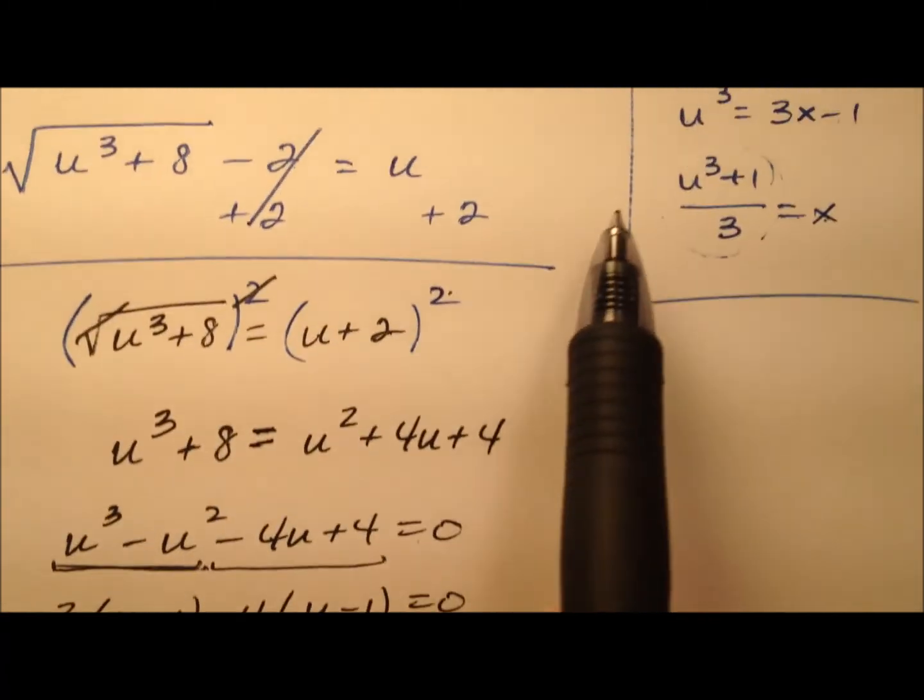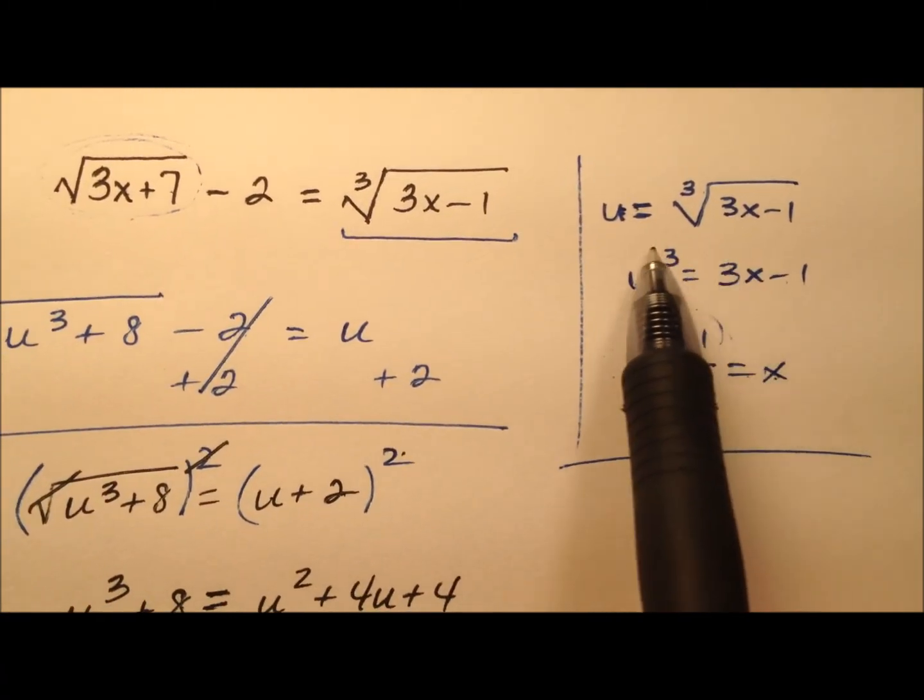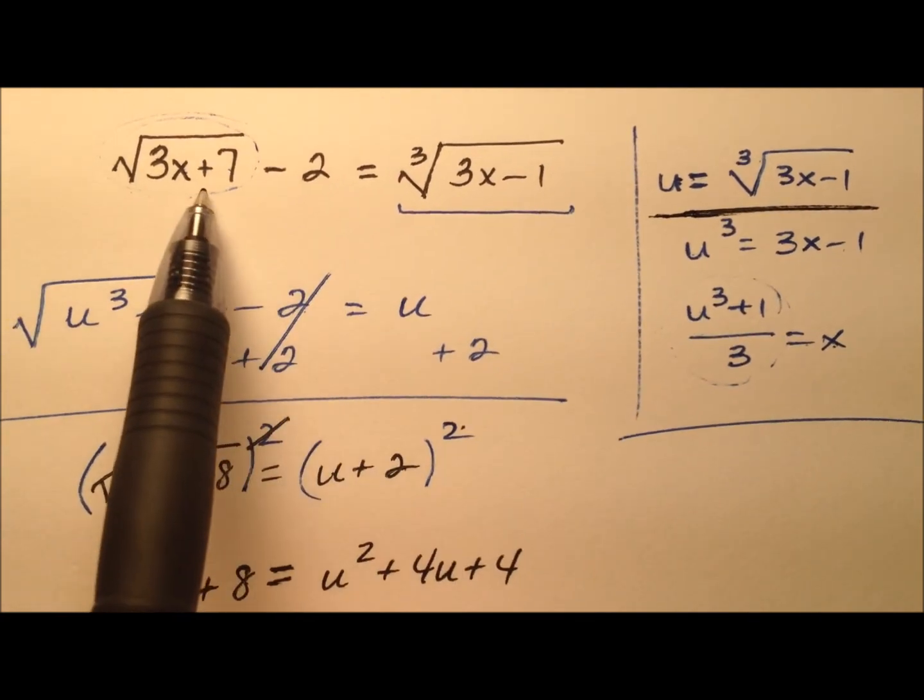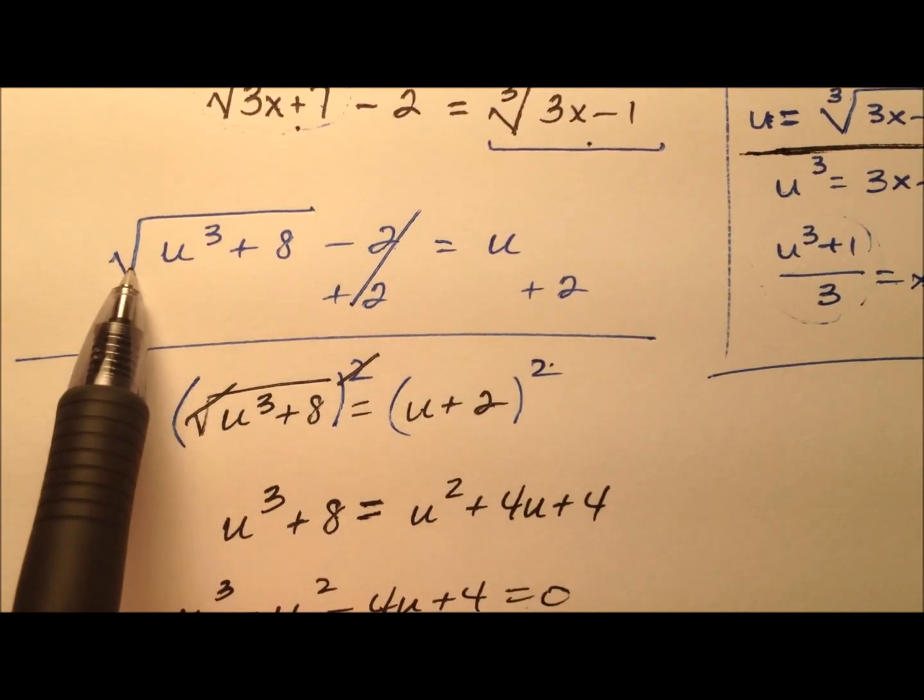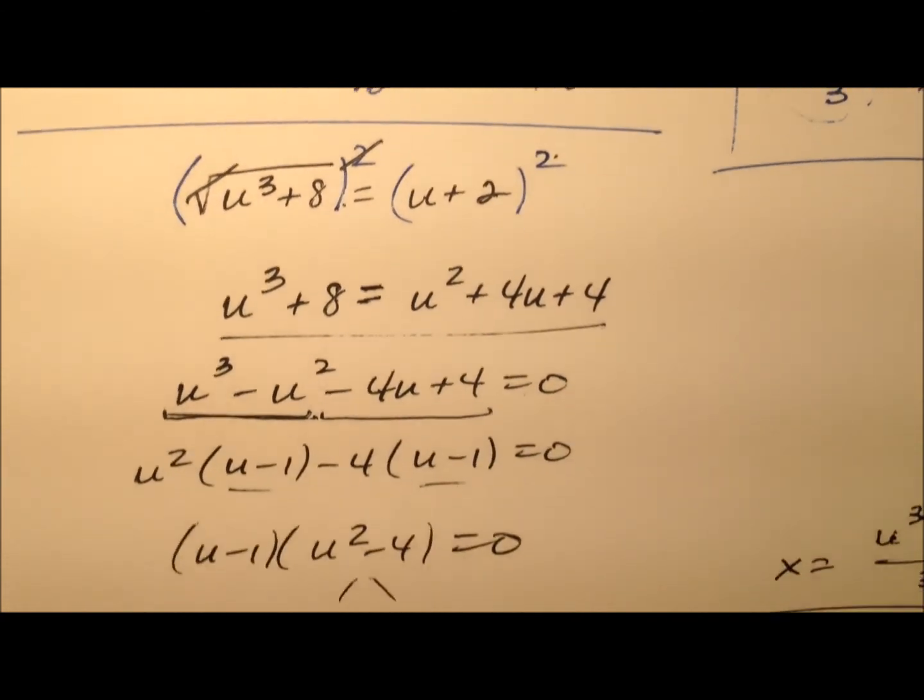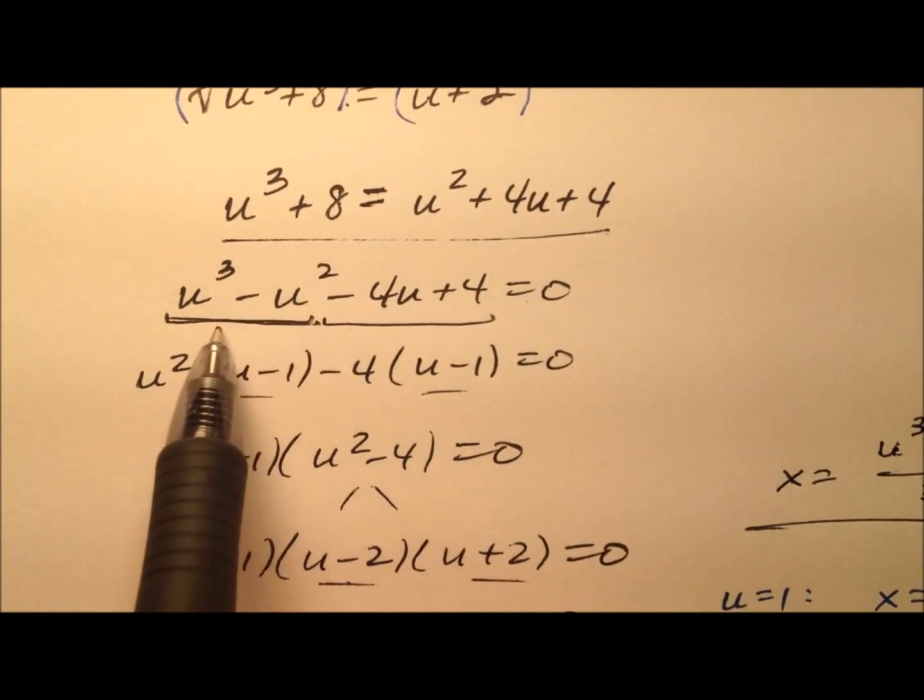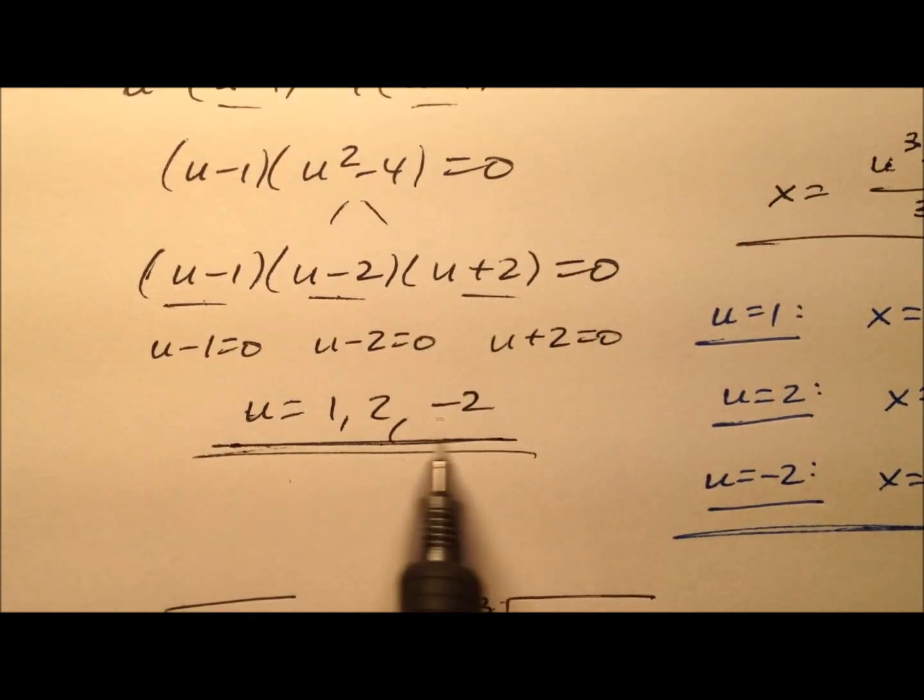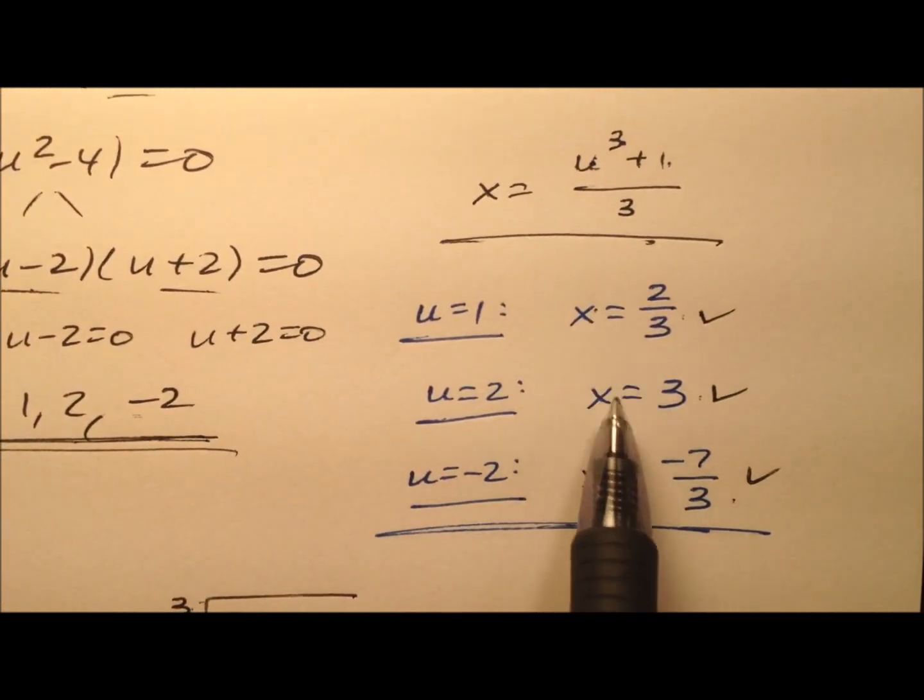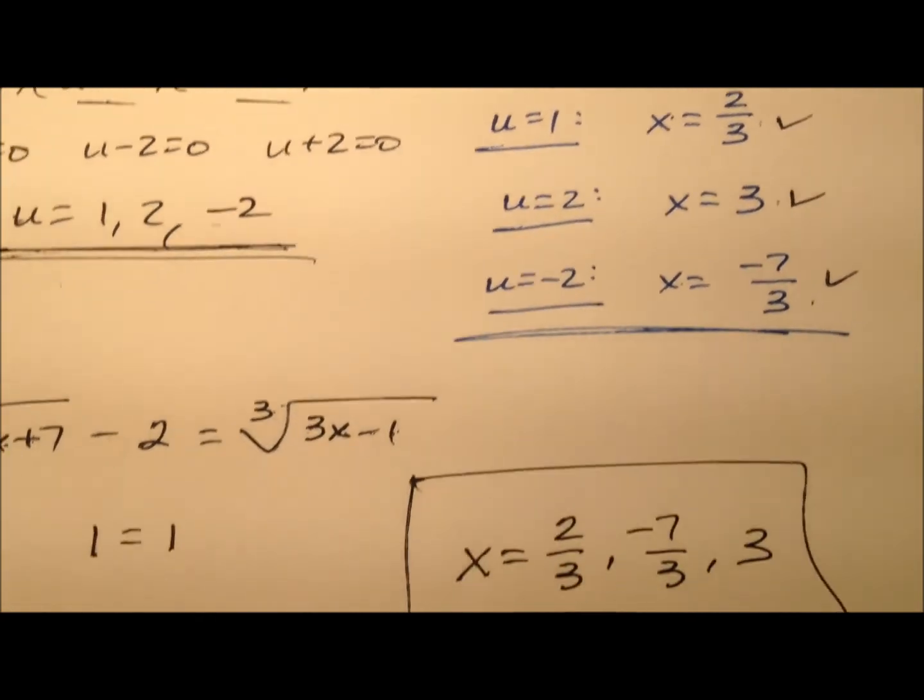And the way we solve this was by using a nifty little u substitution in order to get rid of one of these radicals. We got it down to just the square root, which we isolated, squared both sides. Had really quite a nice polynomial equation here, which factored beautifully. We turned all these u values back into x values. We checked them all, and they actually all worked.